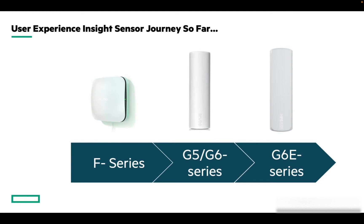Talking about sensors, we started our journey with F-series sensors — the square-shaped, AP-looking ones. Then we transitioned into Wi-Fi 5 and Wi-Fi 6, which are cylindrical shape sensors. Now we have 6 GHz sensors which can not only monitor 2.4 and 5 GHz, but also monitor 6 GHz — our 6c series.